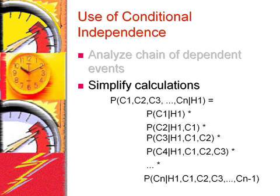If we stay with our analogy that conditioning is reducing the sample size to the portion of that sample as the condition, then the above formula suggests a sequencing for reducing the sample size. Because there are many events, the data has to be partitioned into an increasingly smaller size. Obviously, for data to be partitioned so many times, one needs a larger database.